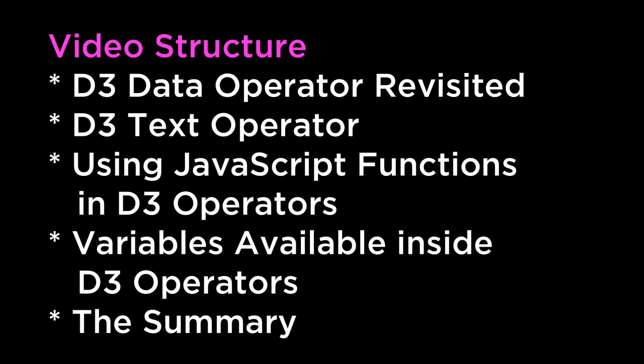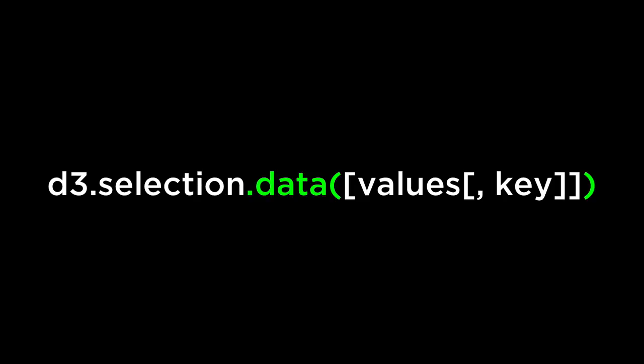Alright, let's get started. D3 data operator revisited. This is the D3 data operator. We have seen it before when we gave it values to bind to the selection. The data operator joins the specified array of data with the current selection. What we did not cover was what happened if you called the data operator without any values inside. When the data operator is called without any values, it returns the data property for each element in the selection.